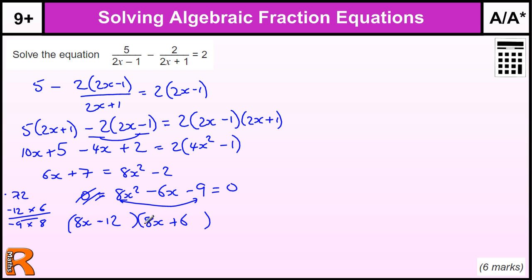And from there I'm going to cancel down any factors. So 2 goes into 8 and 12, but also 4 goes into 8 and 12. If I divide by 4 I'll get 2x and minus 3, and then divide this one. This one's got a factor of 2, so it's 4x plus 3, and then we're going to have that equals 0.